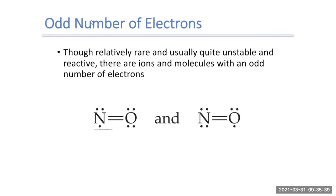Looking at the first exception with odd numbers of electrons — this is relatively rare, quite unusual, and quite unstable for reactive substances. These are ions or molecules with an odd number of electrons. If we look at nitrogen monoxide, NO, nitrogen has five valence electrons and oxygen has six, giving us 11 valence electrons total.